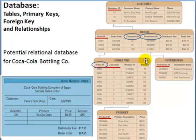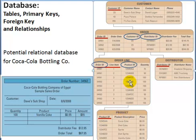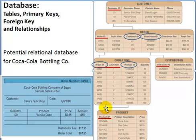Are there any other foreign keys in the order line table? Yes — product ID in the order line table is used as a primary key in the product table, making it a foreign key. We usually call this a foreign key-primary key pair. They don't have to have the same column name, but they must have the same meaning. Both columns need to have the same data type, and if it's a string, the same number of characters, in order to build the relationship between the two tables.